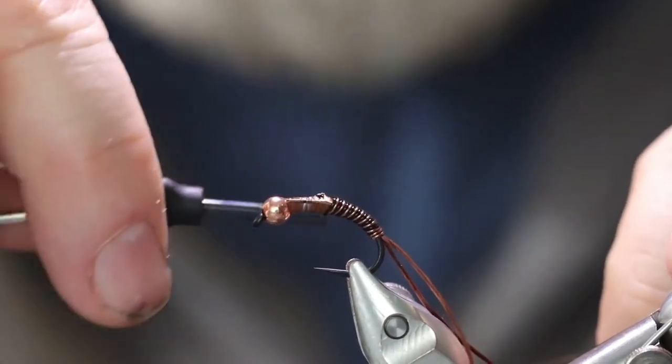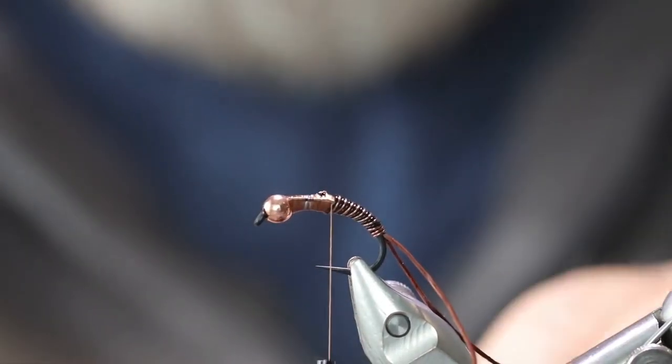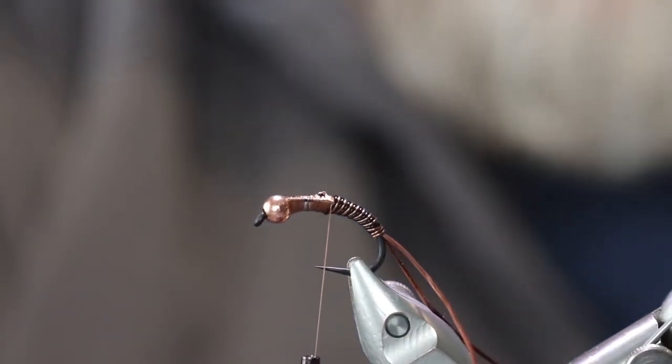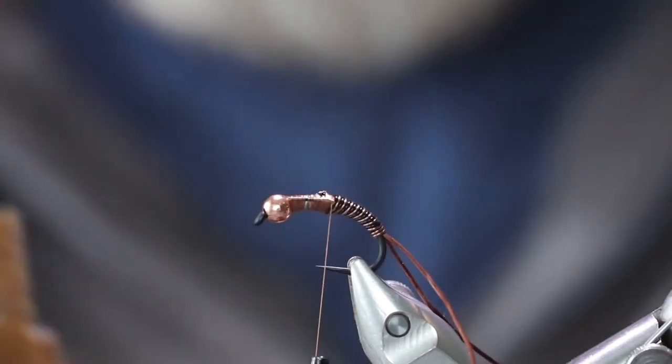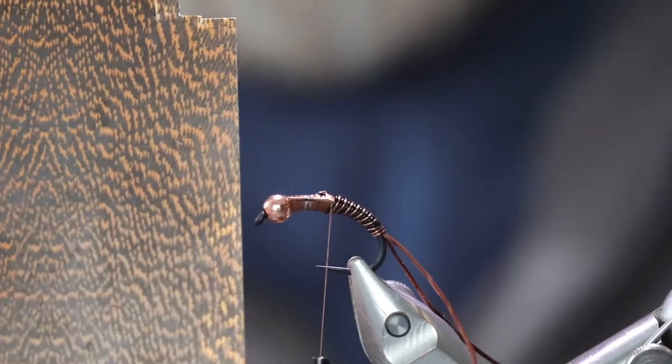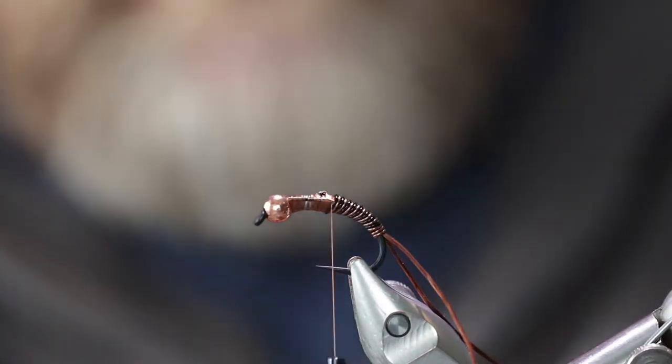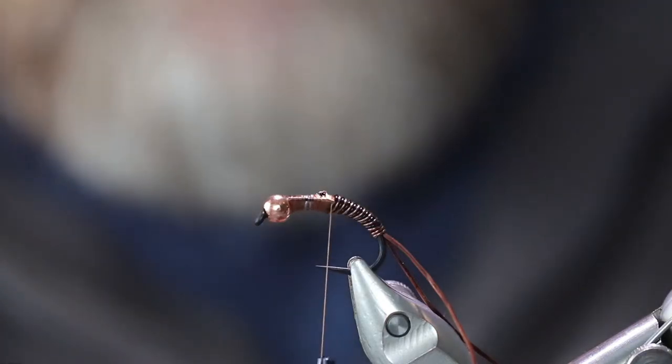Get your wire back down to the, your thread back down where the wire is. Now I'm using some Thinskin in this orange bustard color. I really like it for the wing case. Kind of gives it a mottled appearance. You can use black or clear, whatever color you want. This is just the color I choose to use on it.